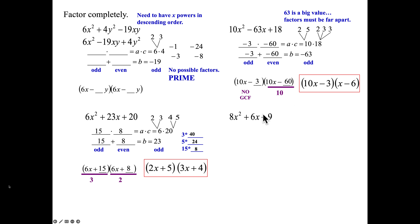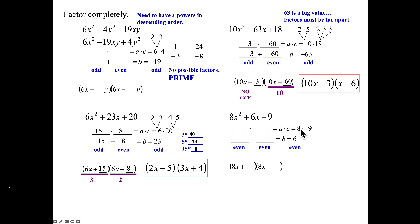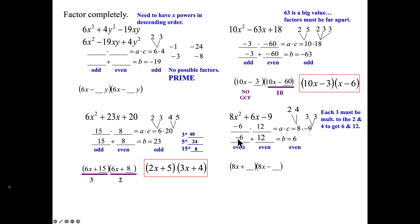8x squared plus 6x minus 9. It's a minus 9, so signs are opposite: 8x plus something, 8x minus something. What two numbers multiply to be 8 times negative 9 and subtract to be 6? 6 is even, 8 is even, so even and even — break the 8 down to 4 and 2. The 9 is 3 and 3. This 2 multiplies to a 3, and the 4 multiplies to a 3: that gives 6 and 12, and 12 minus 6 is 6. So 12 carries the plus sign, 6 carries the minus sign. 6 goes in the minus blank, 12 goes in the plus blank. 8 and 12 have a GCF of 4, giving 2x plus 3. 8 and 6 have a GCF of 2, giving 4x minus 3. There is my final answer.